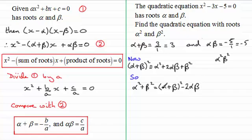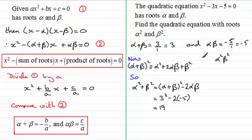Since we know α + β = 3 and αβ = −5, we get α² + β² = 3² − 2(−5) = 9 + 10 = 19. And α²β² = (αβ)² = (−5)² = 25.